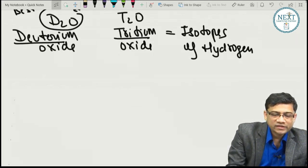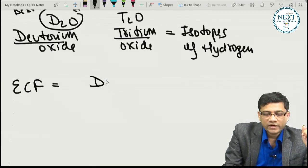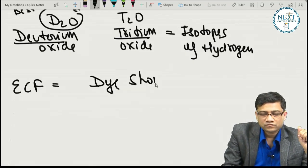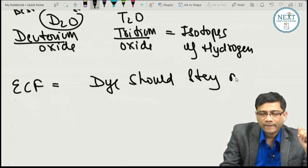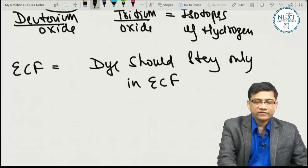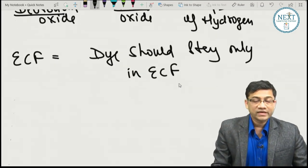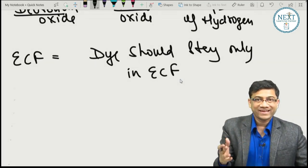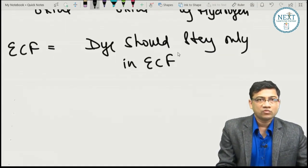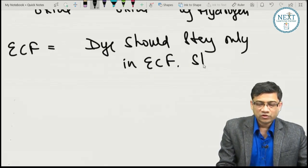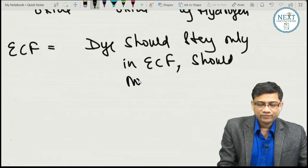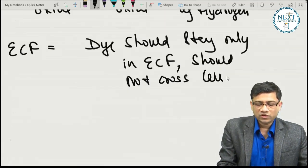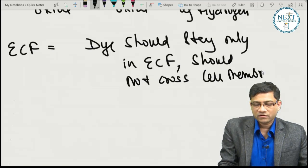For ECF estimation, the dye must stay only in the ECF and not cross the cell membrane. That is why we use water-soluble dyes that cannot enter cells. Sugars are water-soluble and non-toxic, but small monosaccharides can enter cells via GLUT transporters.